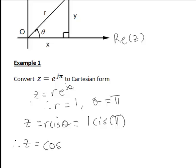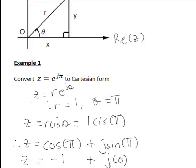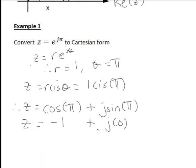And the final thing is we then expand this, remembering that cis θ is cos θ, in this case cos π, plus j sin θ, or j sin π in this case. And in this case cos π is just negative 1, sin π is 0. So therefore for this example, z is negative 1 plus j times 0, which tells us in fact that e to the jπ is just equal to negative 1.